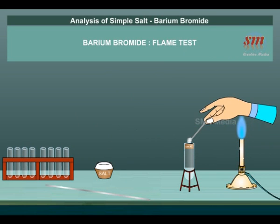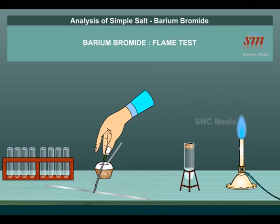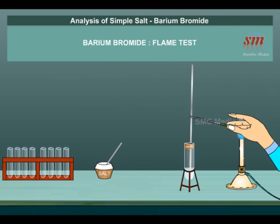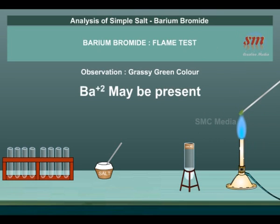Prepare the paste of concentrated HCl plus salt in a watch glass, then introduce this paste using a platinum wire loop into the flame. Observation: Grassy green color. Inference: Ba²⁺ ion may be present.